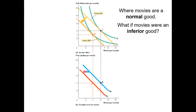Remember we assume that movies are a normal good. But how would we represent this situation if movies were an inferior good? That is, if when income falls the quantity demanded rises, and vice versa — if income rises, the quantity demanded falls. This is the definition of an inferior good. That's just something for you to think about — we might discuss it in class.